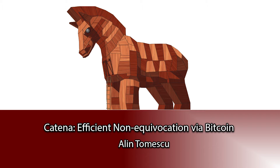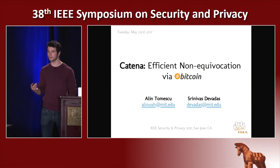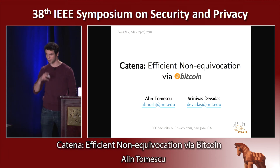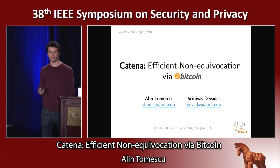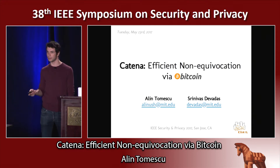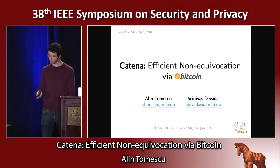Hi everybody, my name is Alin, and today I'll be talking about Katina, which is an efficient to verify non-equivocation scheme built on top of Bitcoin. Katina is actually a very simple idea, but it has surprisingly powerful applications like public key directories.